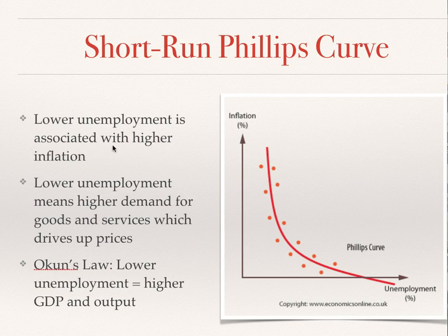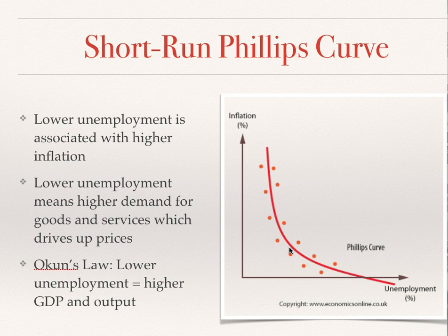Just to wrap up: lower unemployment means higher inflation — that's the relationship we need to understand. As we go into economic policies, we need to consider that we've got conflicts between our goals. Between our inflation target of two to three percent and unemployment, if we reduce unemployment, we're going to see an increase in inflation, and we've got that trade-off.